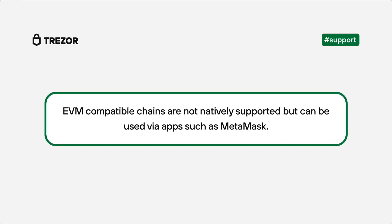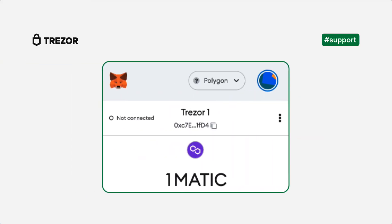The next group are coins running on EVM-compatible chains which are not supported natively in Trezor Suite. These are often confused with Ethereum tokens since they use the same address format. Common examples are Polygon, Avalanche, or Binance Smart Chain. Always be aware of the type of network you are using when receiving these coins from an exchange. Click the link in the description or watch our video here that shows how to use them in MetaMask.